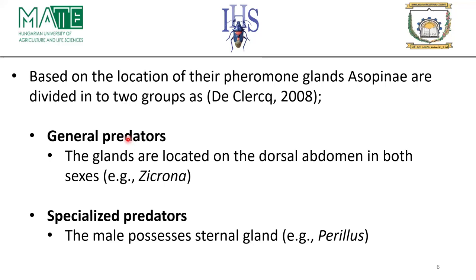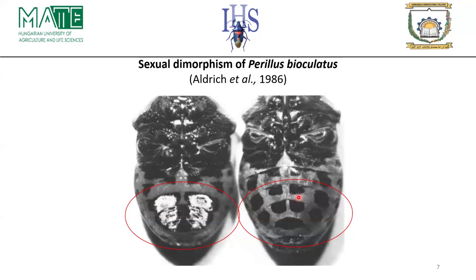Within Asopinae we have two groups: general predators and specialized predators, based on the pheromone gland located on the abdomen. In general predators, the glands are located on the dorsal abdomen in both sexes, whereas in specialized predators they are only found in males — for example, Perillus bioculatus as a specialized predator, and Zicrona as a general predator. A pictorial representation of the specialized predator shows sexual dimorphism of Perillus bioculatus as the abdominal difference between male and female.